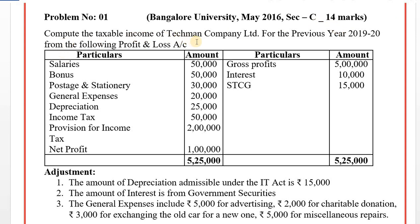Compute the taxable income of Techman Company Limited for the previous year 2019-20 from the following profit and loss account. On the debit side, all expenses and losses are given. We have to decide whether the expenses and losses are admissible or inadmissible. Before that, we need to find in which method the books of accounts are prepared.